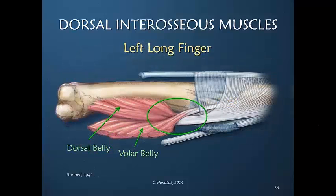So the dorsal belly of the dorsal interosseous muscles crosses under the volar belly and inserts into the dorsal apparatus. The volar belly crosses over the dorsal belly and inserts just distal to the metacarpophalangeal joint. Within the finger, there is an area where the lumbrical and the interosseous muscles, being close together, become adherent relatively easily to one another — just before they meet the intermetacarpal ligament.